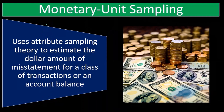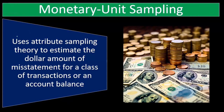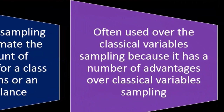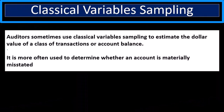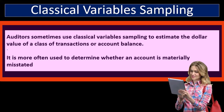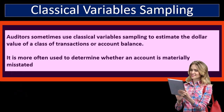Monetary unit sampling uses attribute sampling theory to estimate the dollar amount of misstatement for a class of transactions or an account balance. It is often preferred over classical variables sampling because it has several advantages. Classical variables sampling is also used to estimate the dollar value of a class of transactions or account balance, and is more often used to determine whether an account is materially misstated.